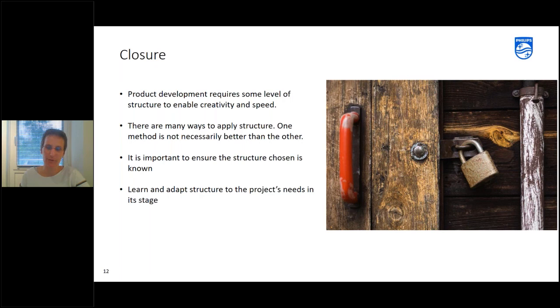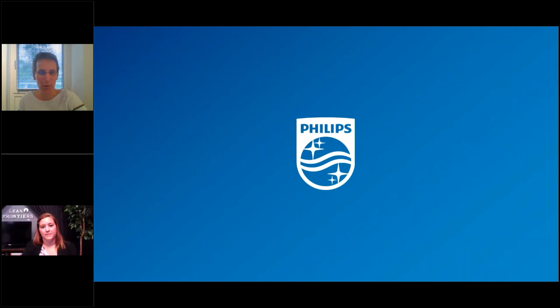So it might very well be that your learning cycles worked very well for you in the front end of the phase. But when you had to move to system level, it didn't work for you anymore and you needed to adapt the structure. That's perfectly normal. It doesn't mean that suddenly your structure is not working anymore. It just means your project needs something else. So that was actually my talk.